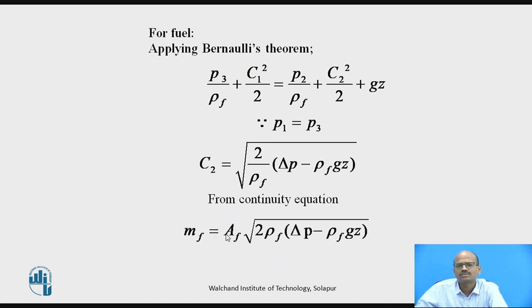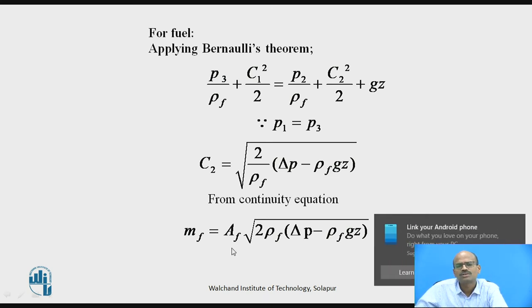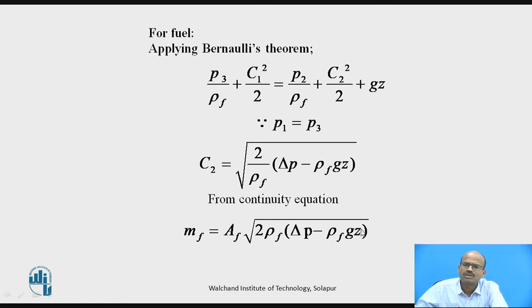From continuity equation we can write. What is continuity equation? M equals rho AC. Now mass of fuel after substituting in the rho AC, here rho F, A2F and C2. Now if they do not give in the numerical value of Z, you can neglect this one. So remaining parameter will be 2 rho F delta P.